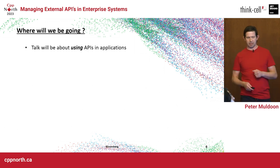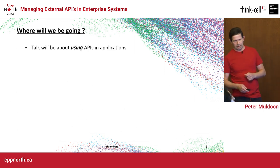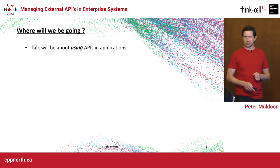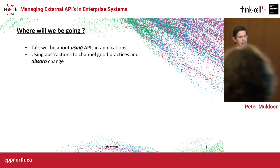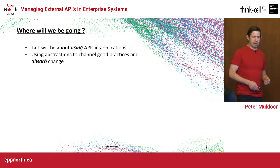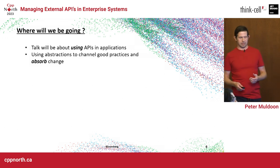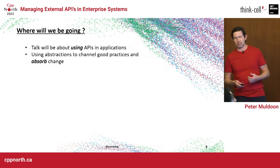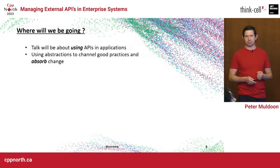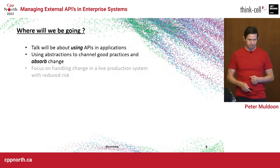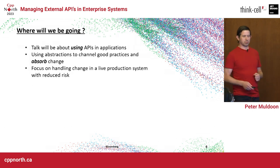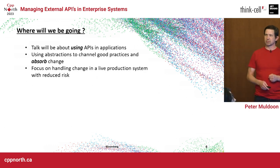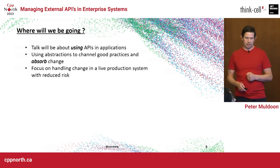What it's really going to be about is using APIs — that's the keyword: using, not creating. We're going to talk about using abstractions to channel good practices, and not only channel good practices with APIs you're given, but also be able to absorb change in a system and mitigate risk when putting it into production. The focus will be handling change in a live production system with reduced risk — it's critical that we don't take production down.